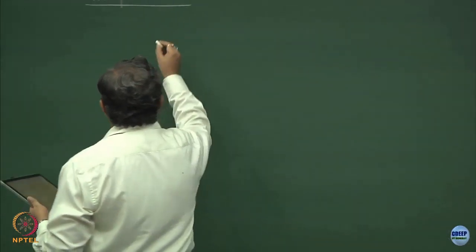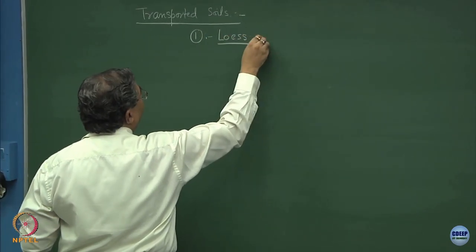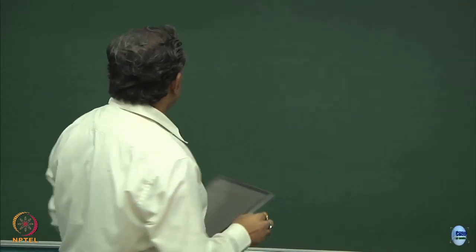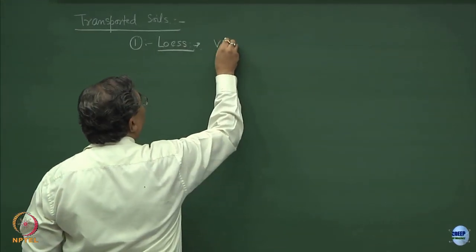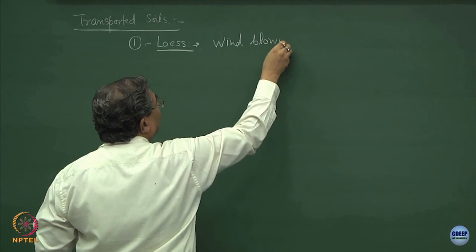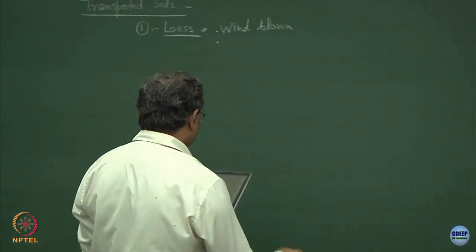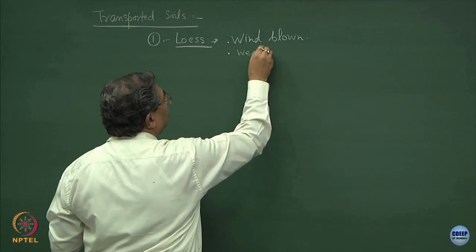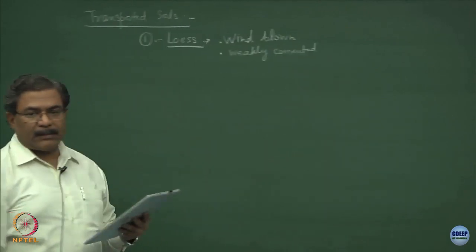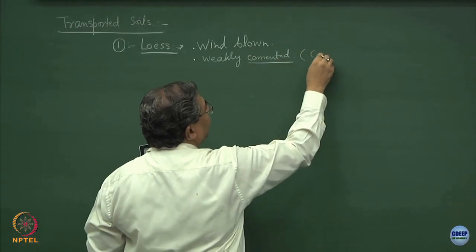First in the category is Loess. We discussed this in the last lecture also. Truly speaking, these are wind-blown deposits, sometimes also called aeolian. They are weakly cemented — for all practical purposes these are loose materials. When we talk about the cementation, it is mostly a calcium carbonate bond.